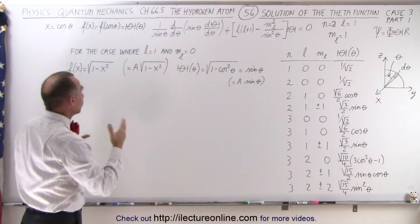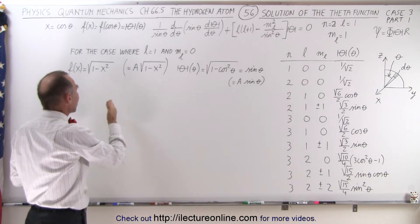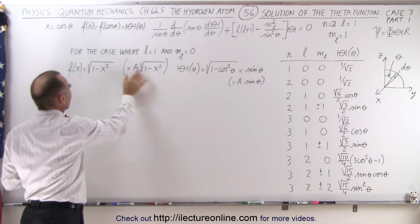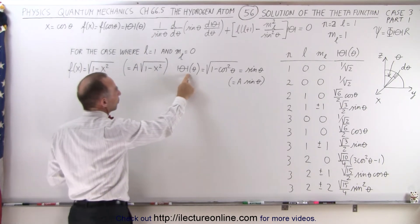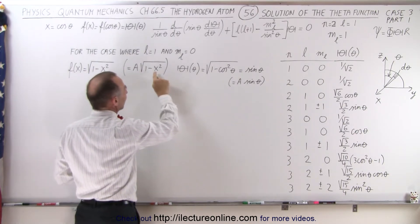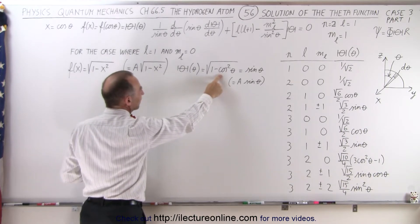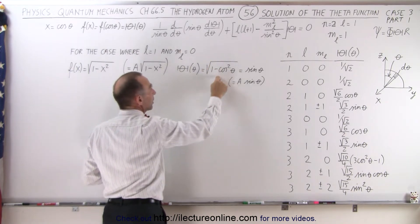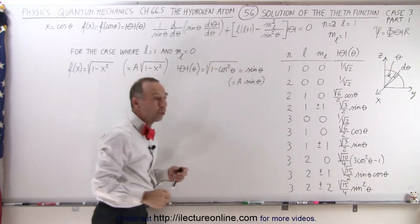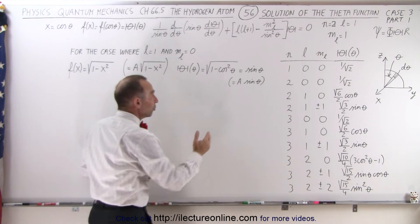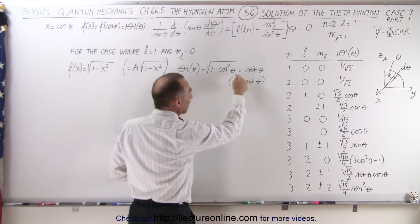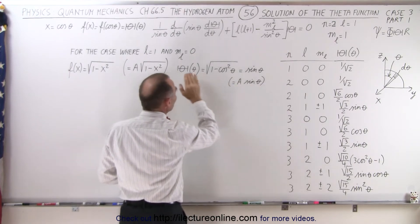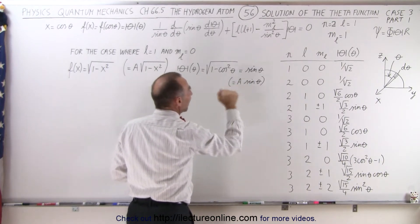With the conversion, knowing that the cosine of theta equals x, the solution for the f function translates into the solution for the theta function. So instead of x, we write the cosine of theta, and 1 minus cosine squared of theta is sine squared of theta. Taking the square root gives the sine of theta. More properly, since we need a constant in front that we'll find by normalizing later, the solution is A sine of theta.